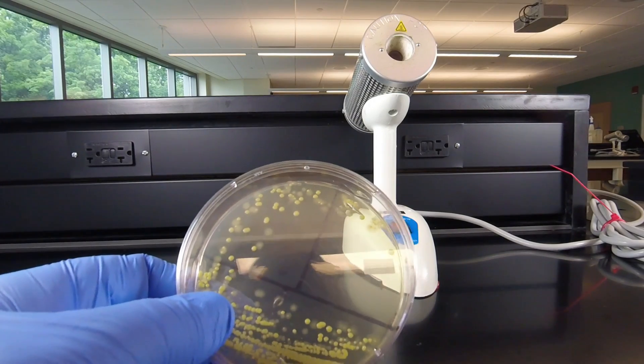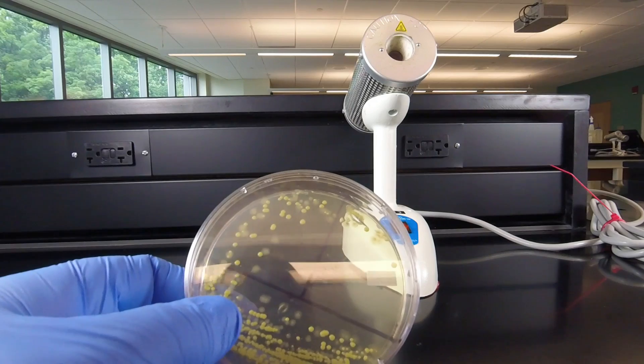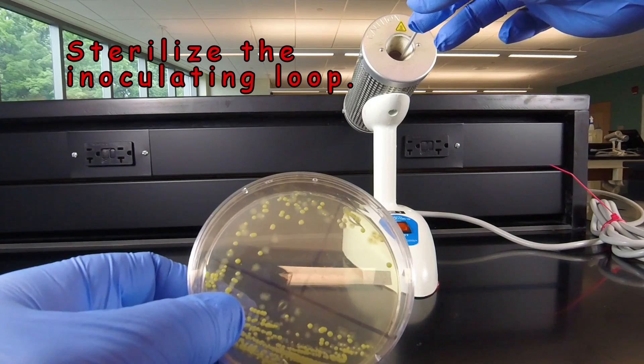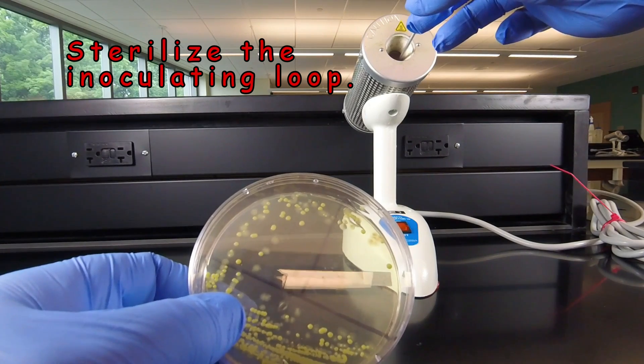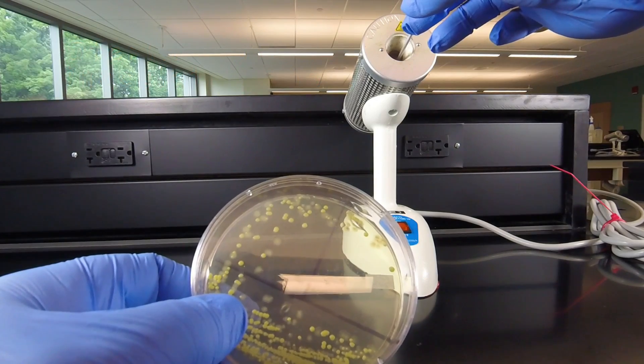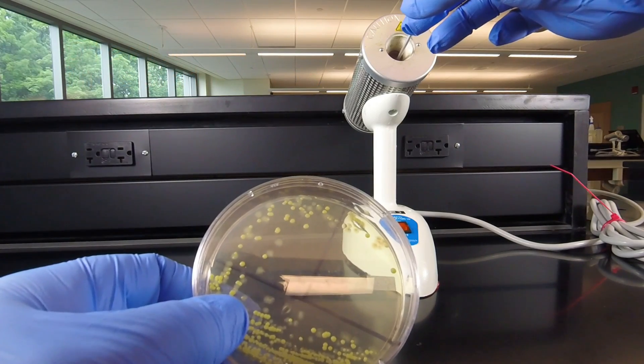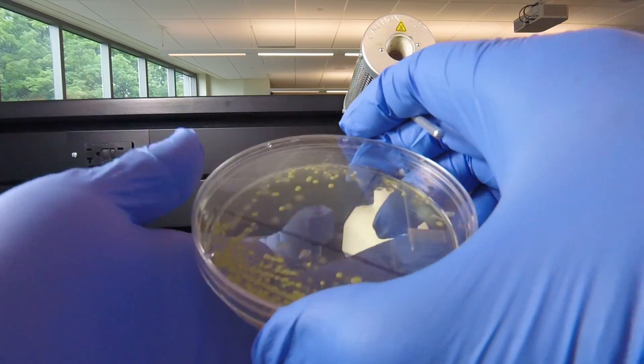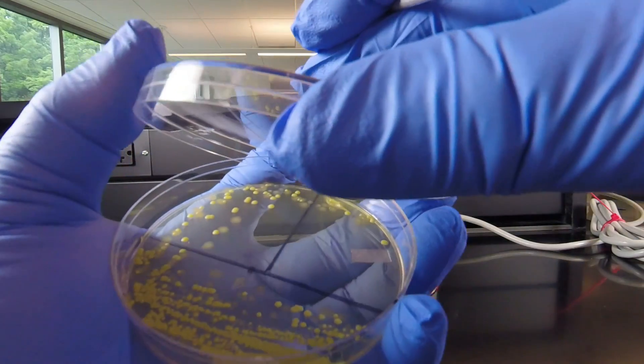So the first thing we do, once we're ready to start picking off our colony, we sterilize the inoculating loop by putting it in the Bacti-cinerator for 10 seconds, and then we're ready to aseptically remove a colony.